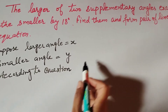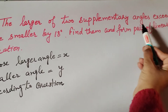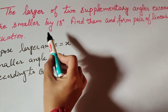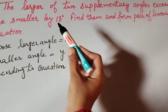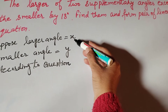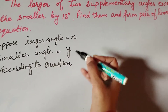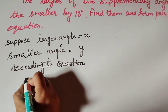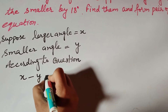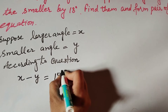According to the question, the larger of the two supplementary angles exceeds the smaller by 18 degrees. The larger angle is x and the smaller angle is y, so x minus y equals 18 degrees.